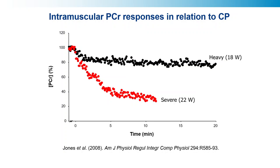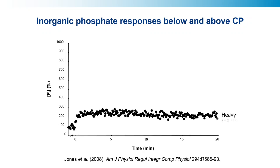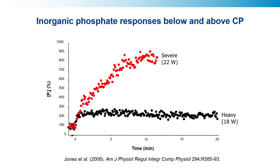They also measured inorganic phosphate, which is even more impressive. In heavy intensity exercise, it rapidly reaches a steady state at about two and a half times the resting concentration. But in severe intensity exercise, a very large inorganic phosphate response of up to 900% — eight or nine times the resting level — was observed. In concentration terms, that means inorganic phosphate values of greater than 15 millimoles per litre, which anyone will tell you is not going to do the muscle any favours. So there may be metabolite-mediated fatigue occurring above the critical power that doesn't occur below it.